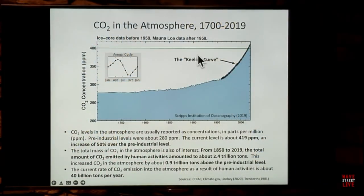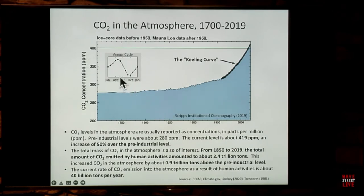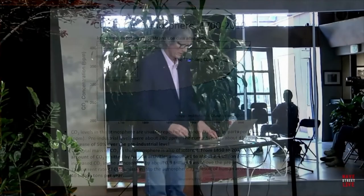CO2 concentration in parts per million from 1700 to 2019 shows that in the pre-industrial era it was very stable at about 280 parts per million. Beginning around 1900 as the Industrial Revolution cranked up and we started burning lots of coal, CO2 started increasing rapidly, and particularly after World War II very rapidly, such that we're now running well above 400 — around 419 or so. You may hear the term Keeling curve — that refers to the detailed measurements by Charles Keeling of Scripps Institution of Oceanography, who identified the annual cycle in CO2: it peaks in the spring and reaches a minimum in the fall in the northern hemisphere, related to the annual cycle of vegetation.